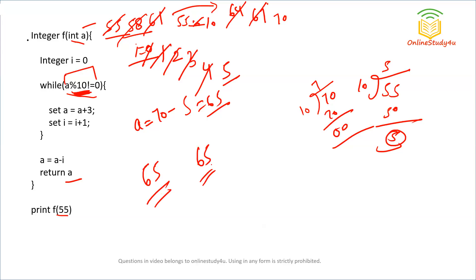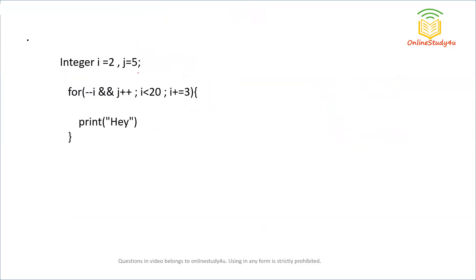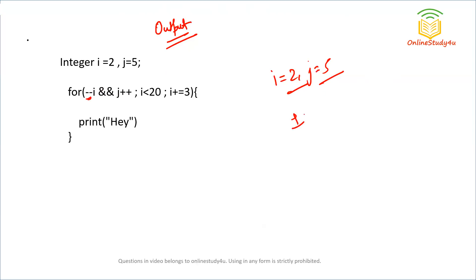Coming to our next question: determine the output of this pseudo code. We have two integers i and j where i is initialized to 2 and j to 5. We have a for loop with the condition minus minus i — this is pre-decrement. In pre-decrement, the rule is: first change, then use. So i will first change from 2 to 1, and then that value 1 is used.